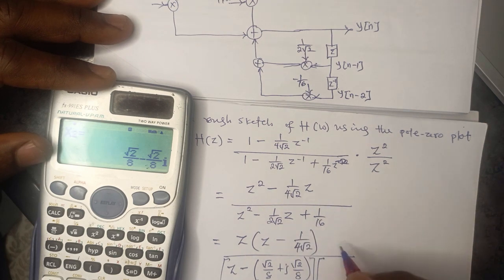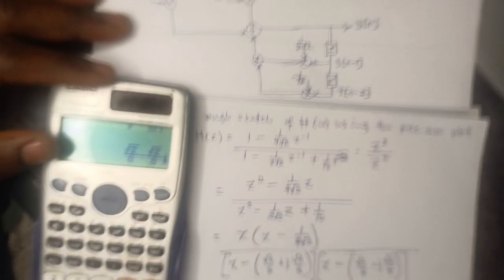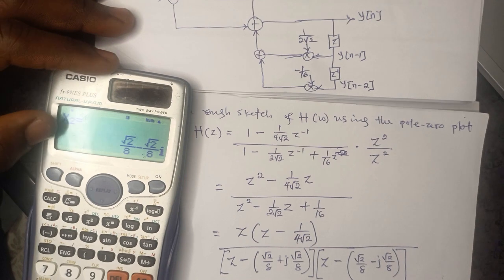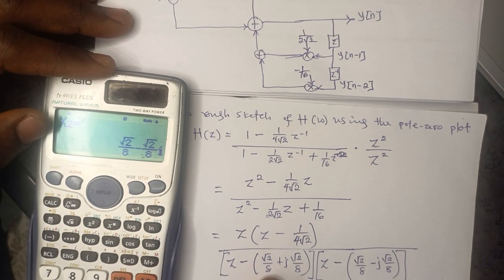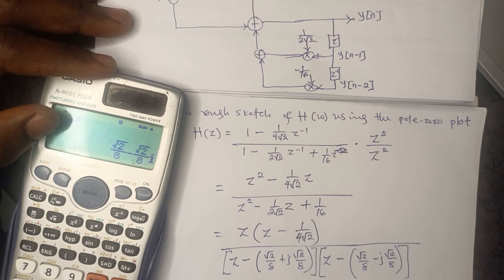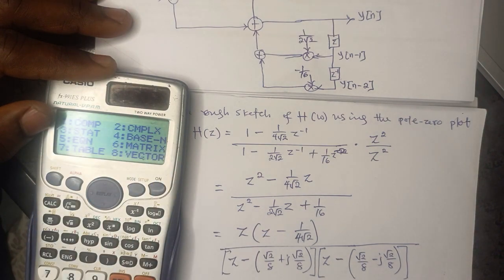The second root is Z = √2/8 − j√2/8. These two roots are complex conjugates of each other.